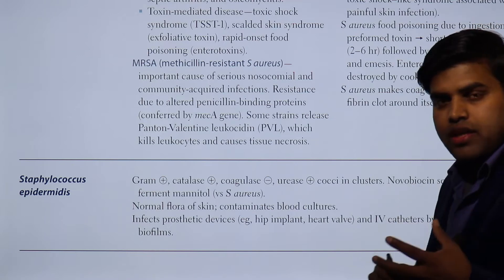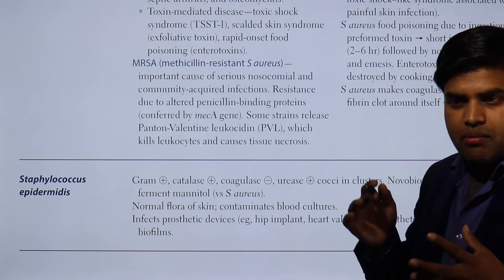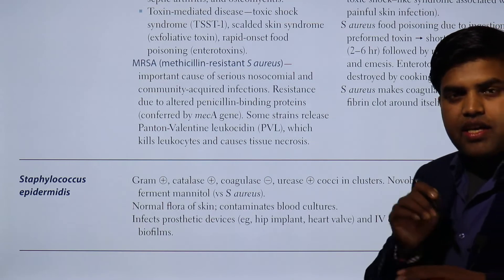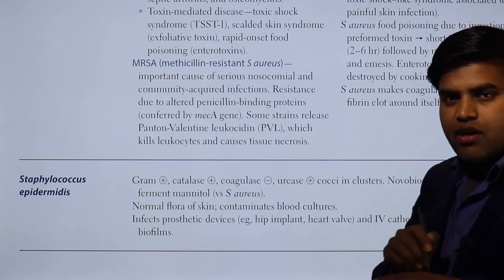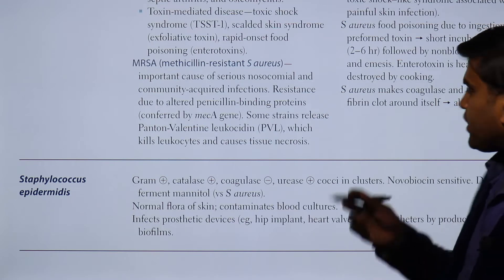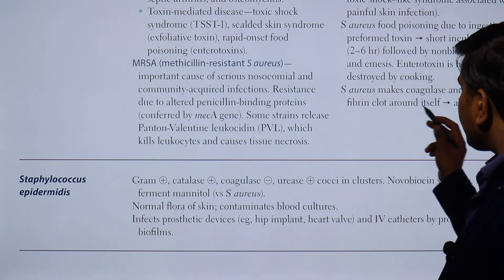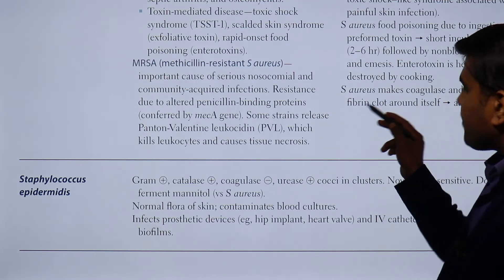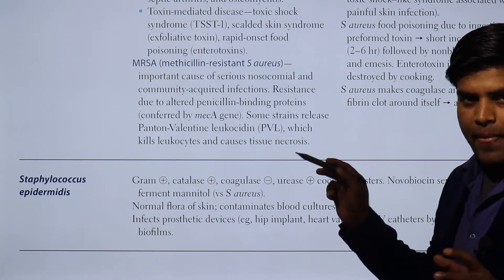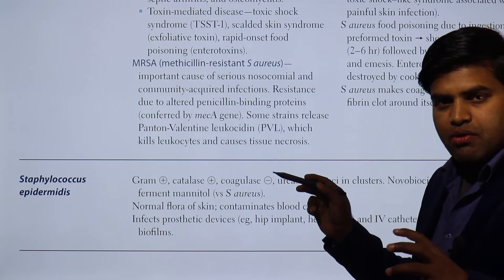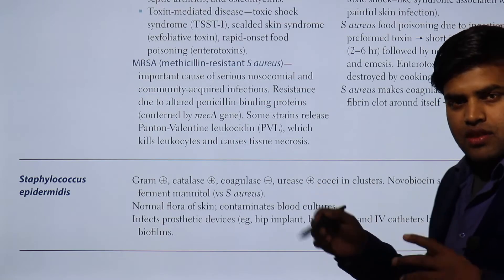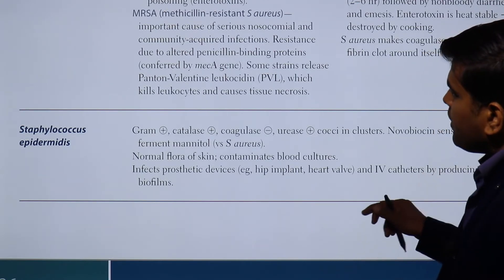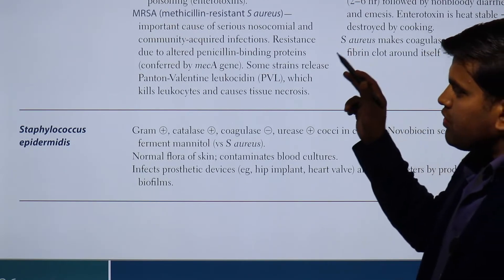Mostly abscesses are formed due to Staphylococcus. All your skin infections like abscess, boil, carbuncle, furuncle — all of these will be staphylococcus. They actually form a fibrin clot around itself due to the enzyme coagulase, which converts fibrin into a clot, forming a boundary. Within that localized boundary, the abscess forms and proliferates.